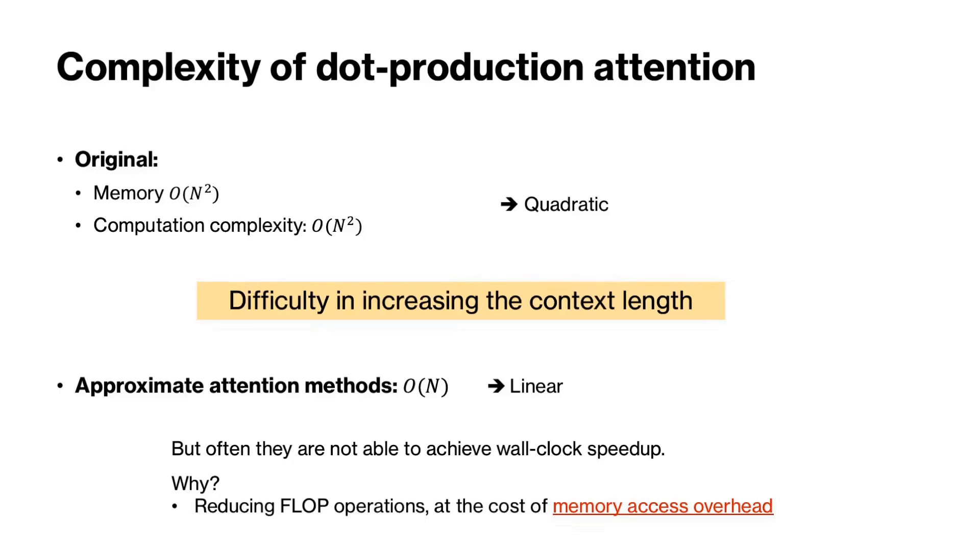We have also covered some approximate algorithms that achieve linear complexity, like the low rank approximation algorithm. However, these methods often do not result in an actual speedup. You may ask how come we make an algorithm run in linear complexity but still no speedup compared to a quadratic algorithm.